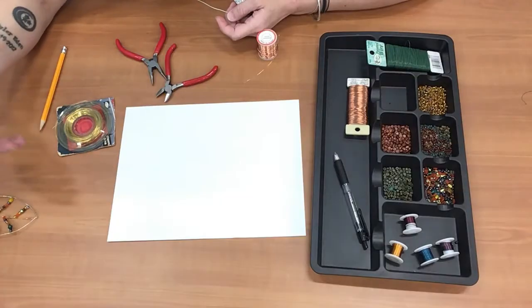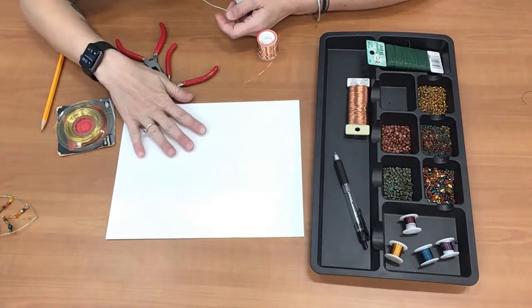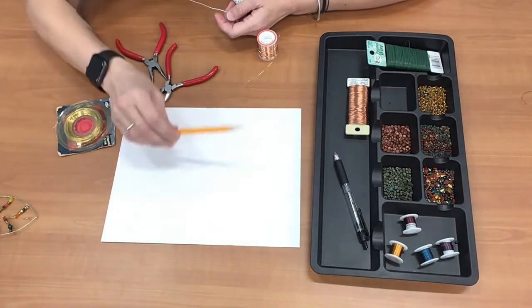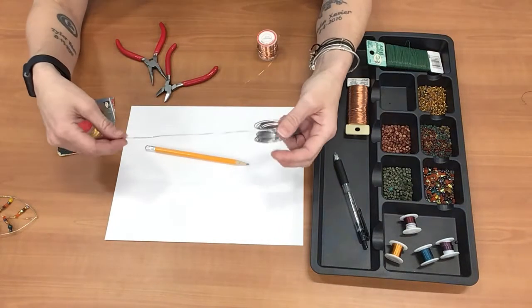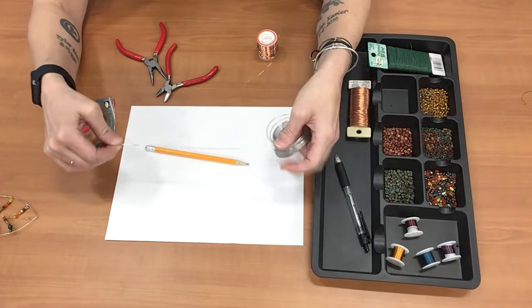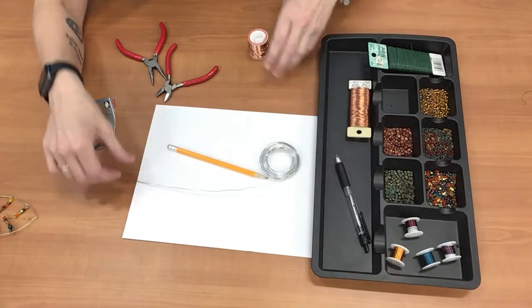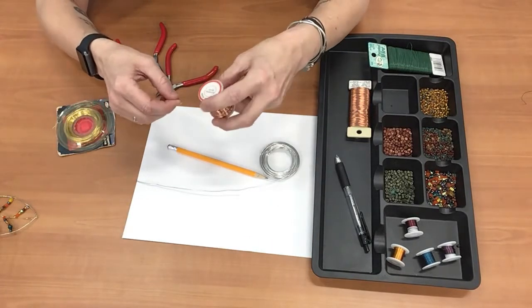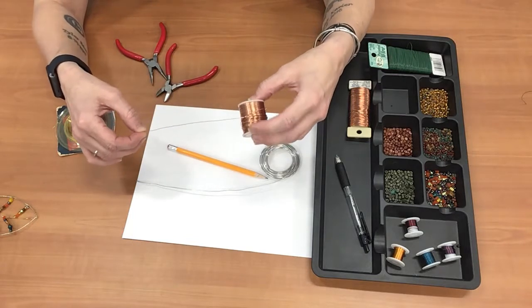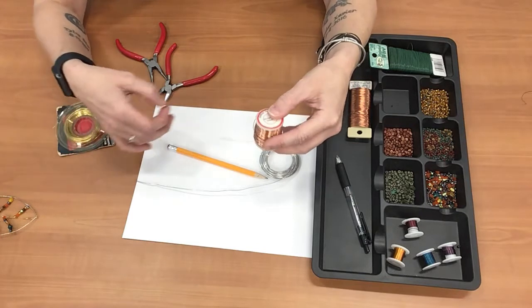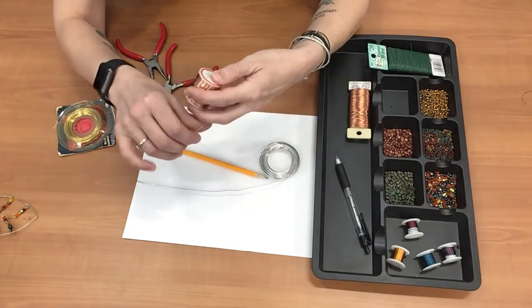So for our materials we're going to need just a piece of plain paper, a pencil, I have some silver 20 gauge wire and I have some copper colored 24 gauge wire and you can get these at the hardware store or at the craft store.